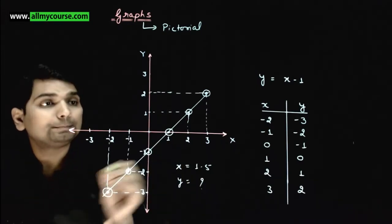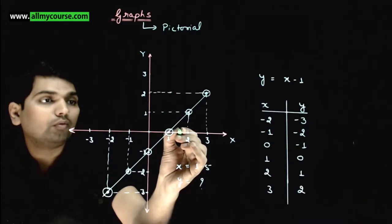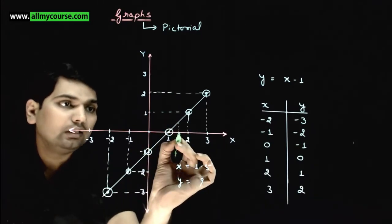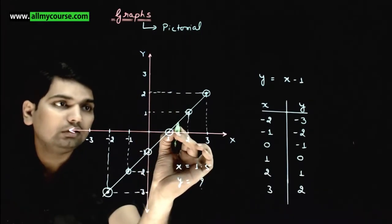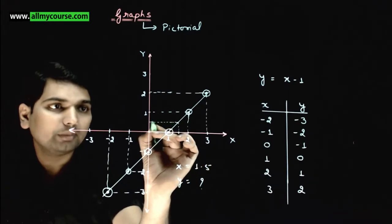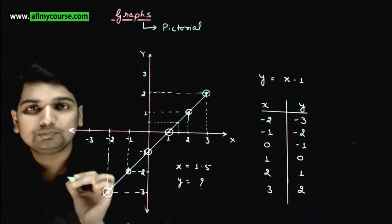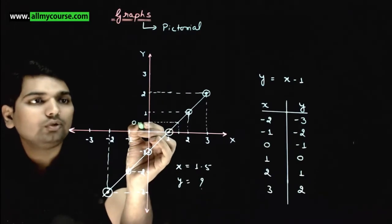How will we find out? For this, corresponding to x equals 1.5, we'll calculate y value. How? From here we draw a vertical line parallel to y-axis. At the point where it meets the graph, from there we draw a horizontal line parallel to x-axis, reaching here. Here you check the y value, it will come out to be 0.5.